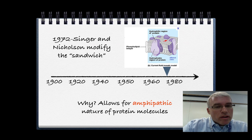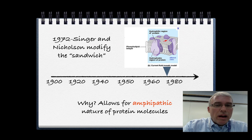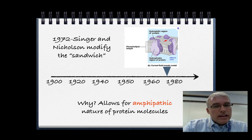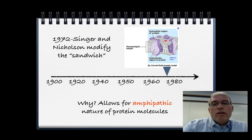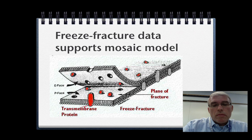Our better understanding of the three-dimensional nature of protein molecules has led us to understand that proteins are amphipathic — meaning they have regions that attract water and regions that repel water. The only way to explain the presence of these proteins in a phospholipid bilayer is if they embed themselves so that their hydrophobic regions are away from the water and their hydrophilic regions are closer to the water molecules.